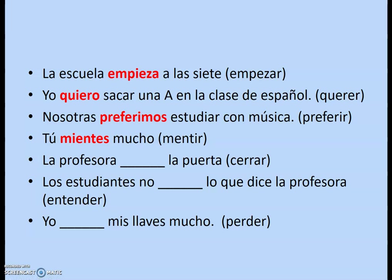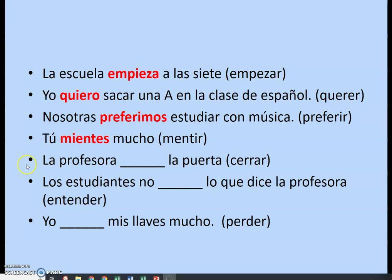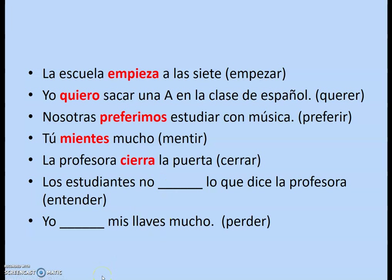For yo with perder: take off the ER, apply E to IE — pierdo mis llaves. Now moving on to O to UE verbs. For los amigos with jugar: jugar is special — it's a U to UE verb, adopted into the O to UE family, and there's really only that one. Since los amigos doesn't include me, it's not nosotros, so it does stem change — juegan.